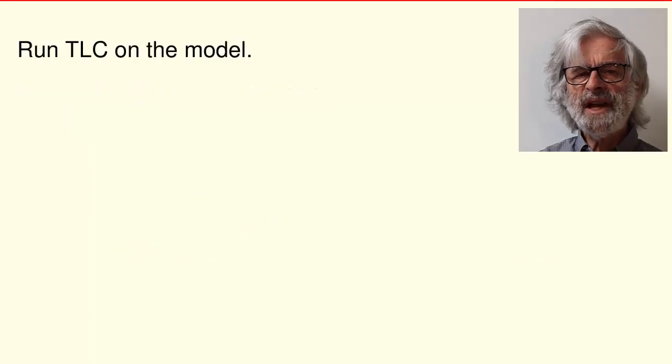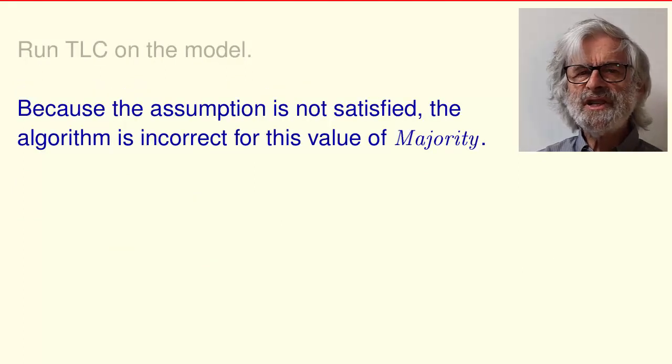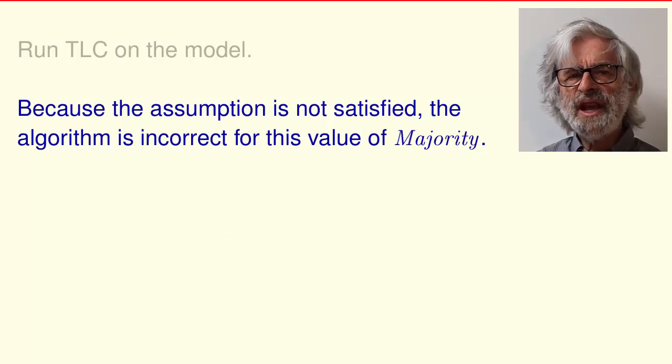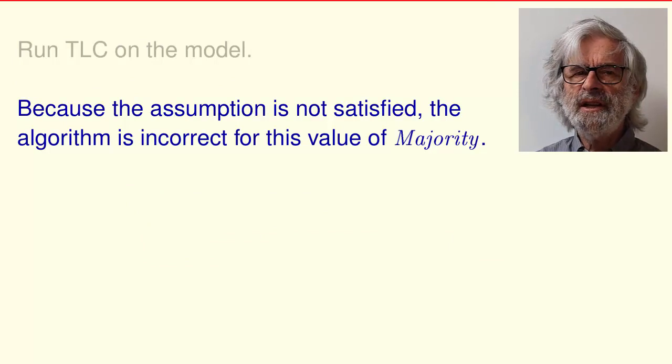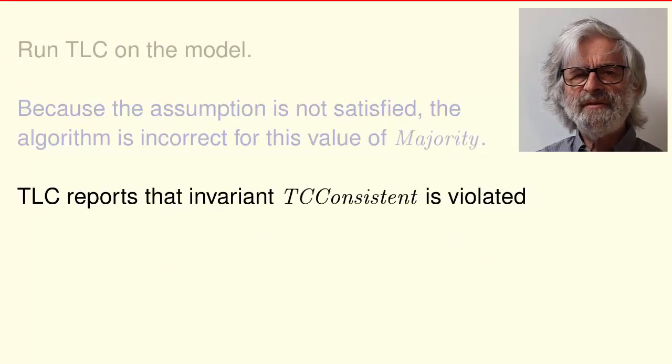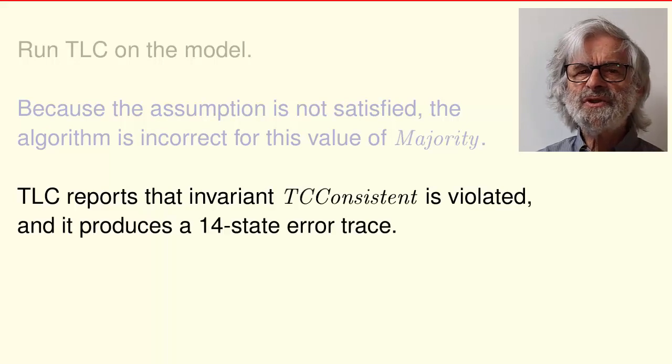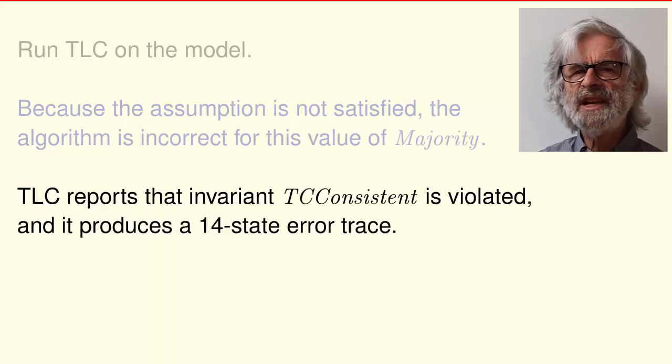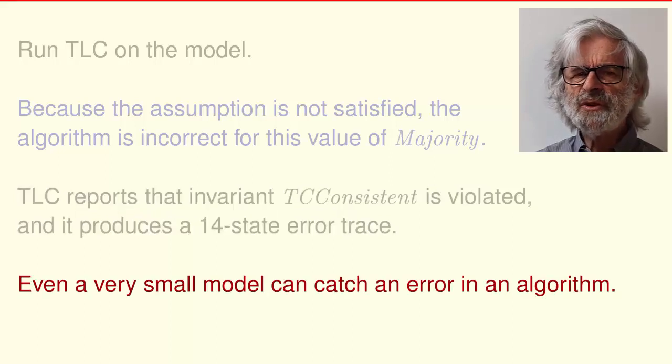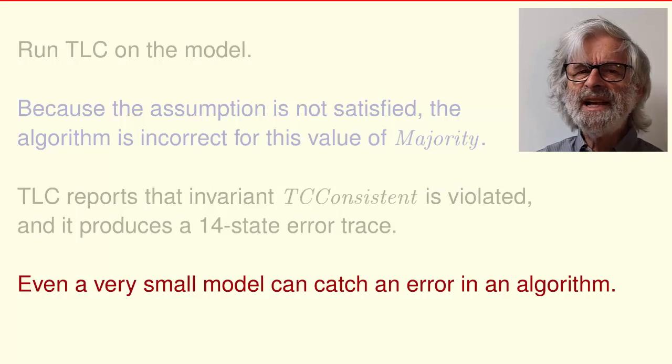Run TLC on the model. Because the assumption is not satisfied, the algorithm is incorrect for this changed value of majority. TLC reports that invariant TC consistent is violated and it produces a minimal length 14 state error trace. The Paxos commit algorithm is correct. But this example shows that even a very small model can catch an error in a real algorithm.